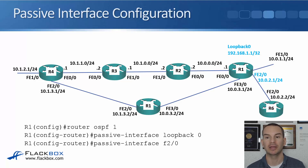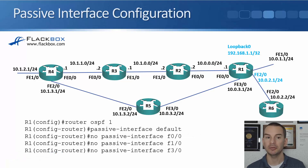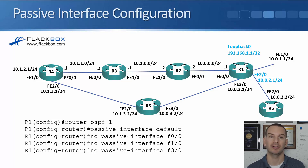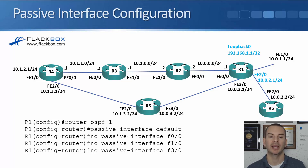We include the loopback as a passive interface so that other routers learn how to get to that loopback address. We're also going to make FastEthernet 2.0 a passive interface — we want internal routers to know how to reach that network, but we don't want to be giving out internal information on that link, which would be a security issue. To configure this: router OSPF 1, then passive-interface loopback 0 and passive-interface FastEthernet 2.0. If most interfaces are passive, you can set passive-interface default to make all interfaces passive, then use no passive-interface FastEthernet 0.0, no passive-interface FastEthernet 1.0, and no passive-interface FastEthernet 3.0 to allow adjacencies on those links.